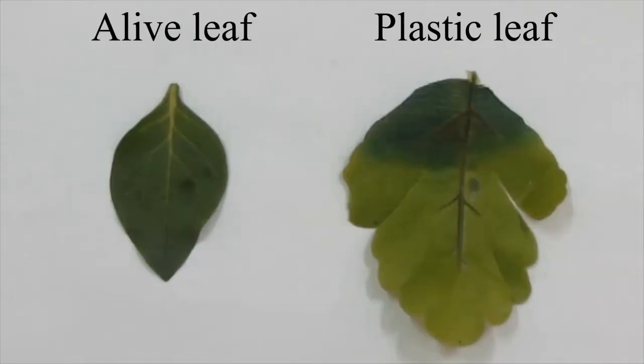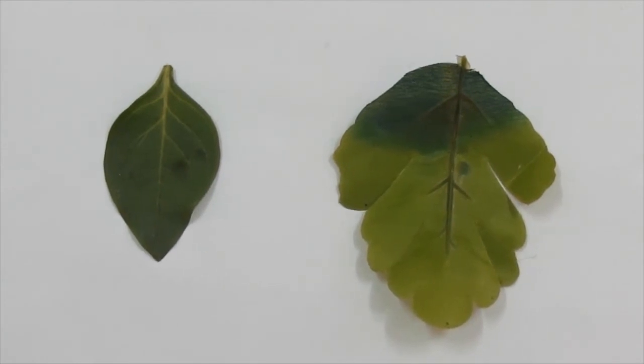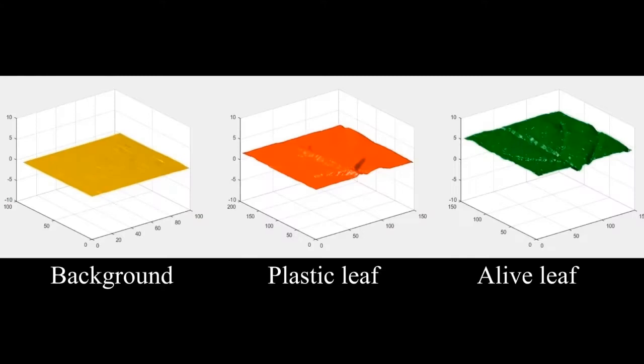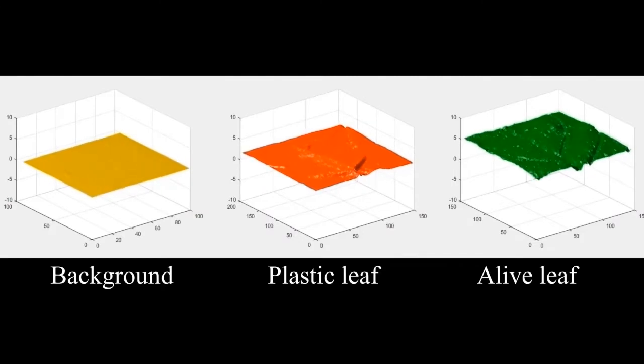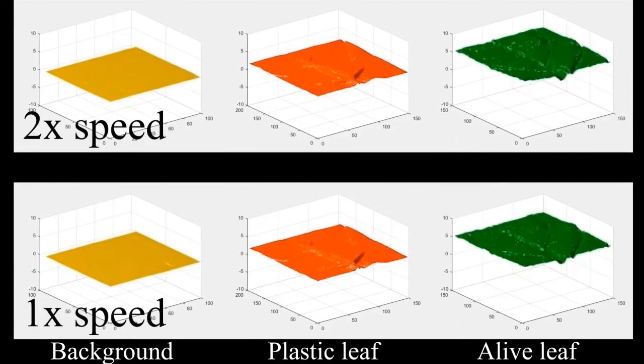We compare the color changes using a live leaf and a plastic one. The changes in the live leaf are greater than both the plastic leaf and the background, which means that the live leaf has something different, which may be attributed to biological operations.